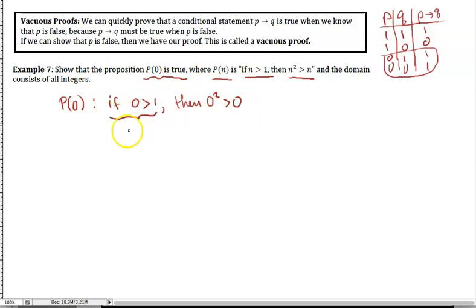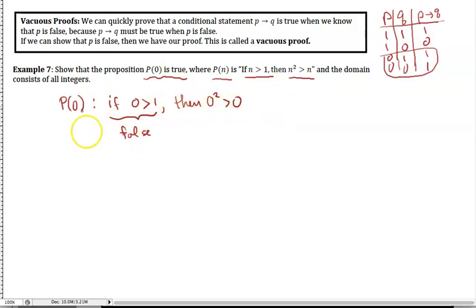The premise here — 0 is greater than 1 — is false. So the statement 'if 0 is greater than 1, then 0² is greater than 0' is true as a whole. This is the vacuous case: because the premise is not fulfilled to start with, it doesn't matter what comes after. That's an example of a vacuous proof.